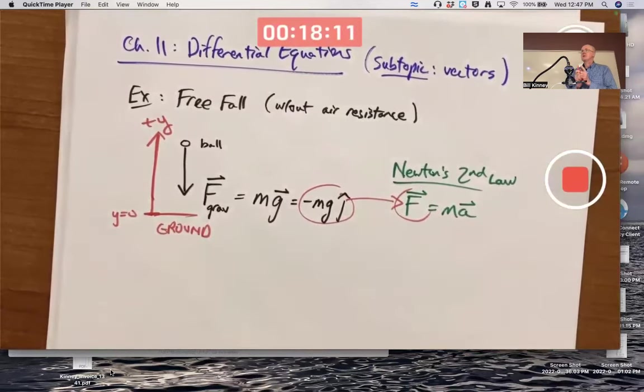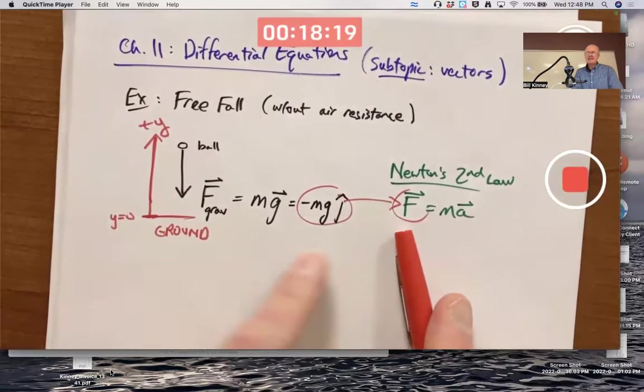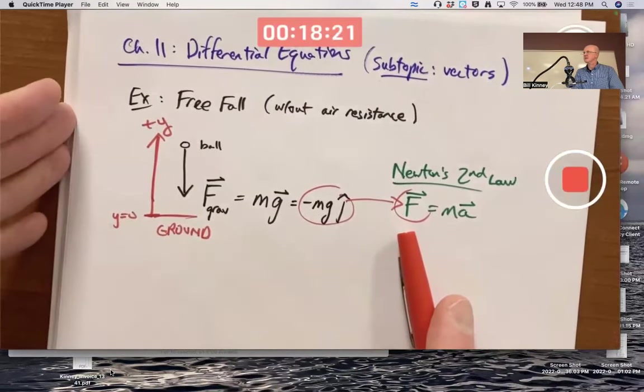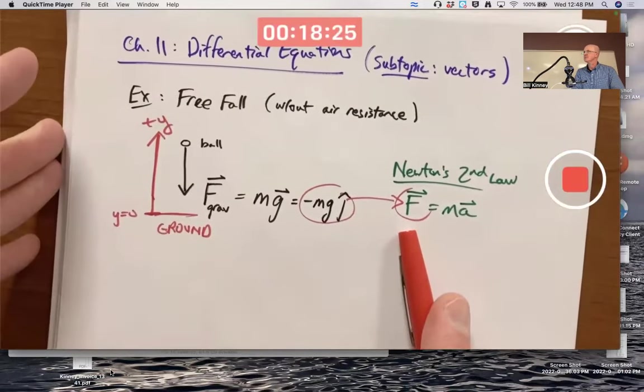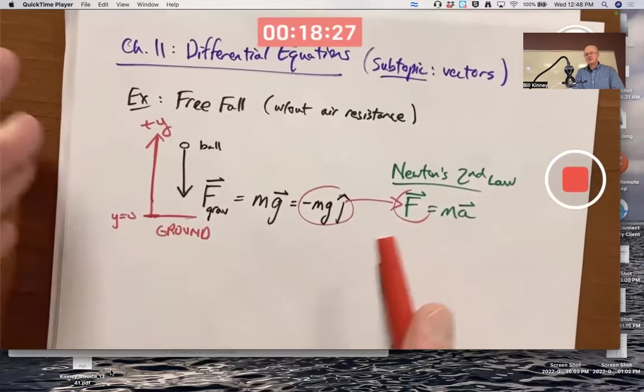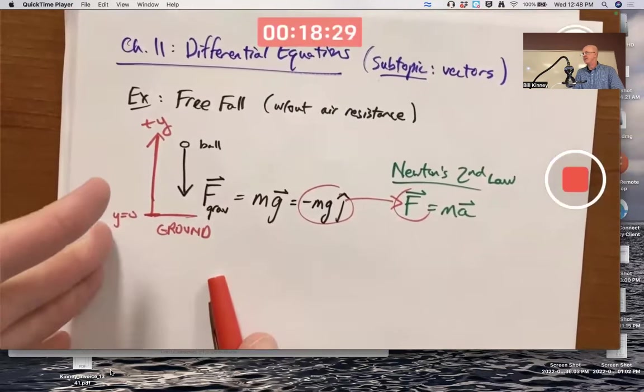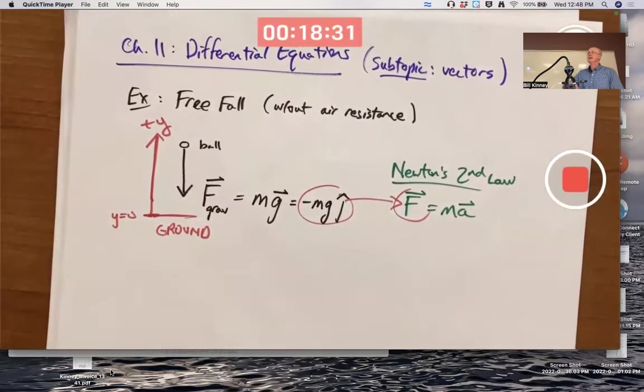Go ahead and replace the force with what it equals here. It's just the force due to gravity. If we allowed air resistance, which we will eventually, maybe next week, I need to add an air resistance force to this and sum those two forces to get the total force. The air resistance force is more complicated than the gravitational force. The gravitational force is a constant vector pointing straight down. It doesn't change.